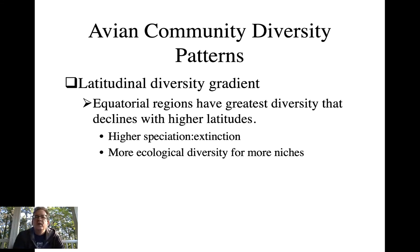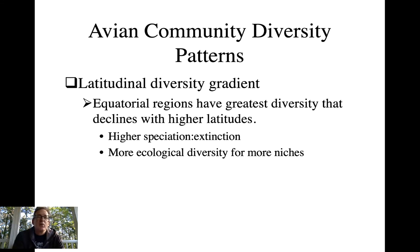There are also latitudinal gradients — equatorial tropical communities tend to have more species, and as you go north or south toward the poles you see a decline in the number of species. Tropical areas have patterns of higher speciation, producing more species locally, less extinction of species in tropical communities, and greater basic support for a greater number of species with greater ecological diversity providing more microhabitats and niches.